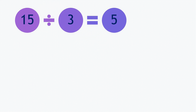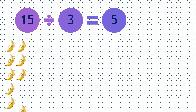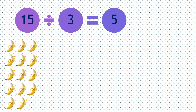Moving on to our next question. 15 divided by 3 equals 5. So if you divided 15 bananas — 1, 2, 3, 4, 5, 6, 7, 8, 9, 10, 11, 12, 13, 14, 15.